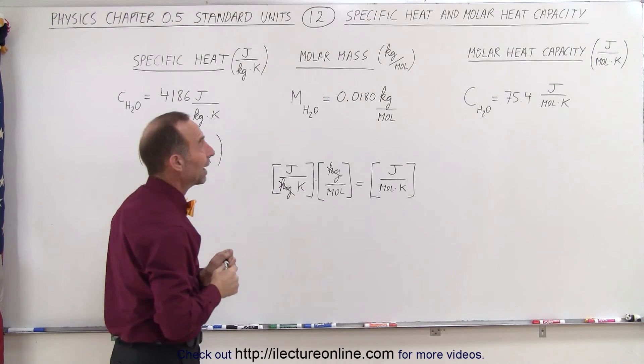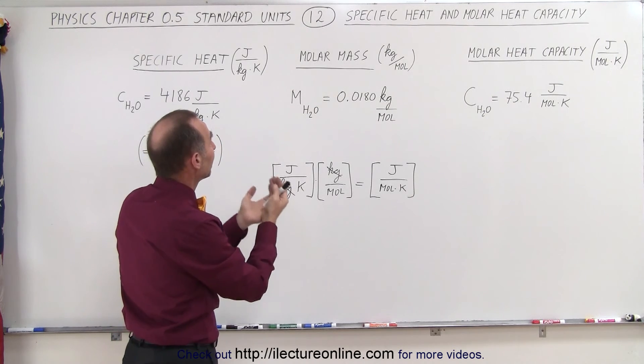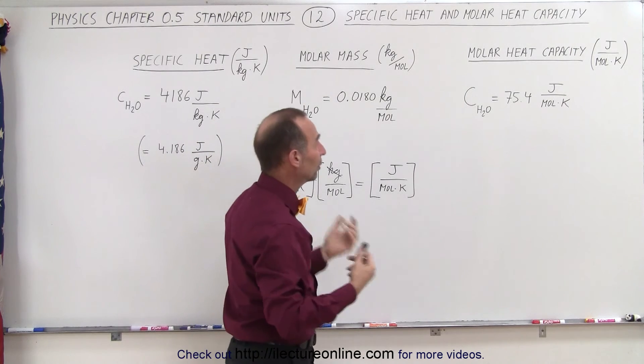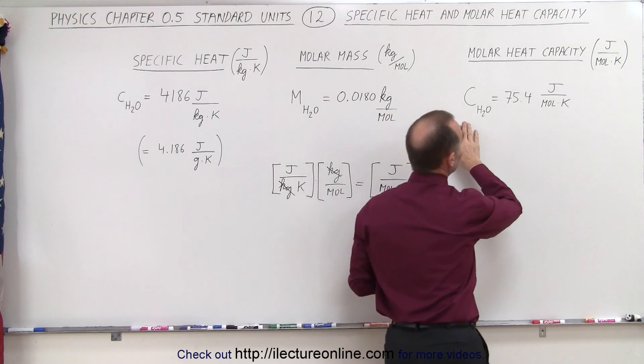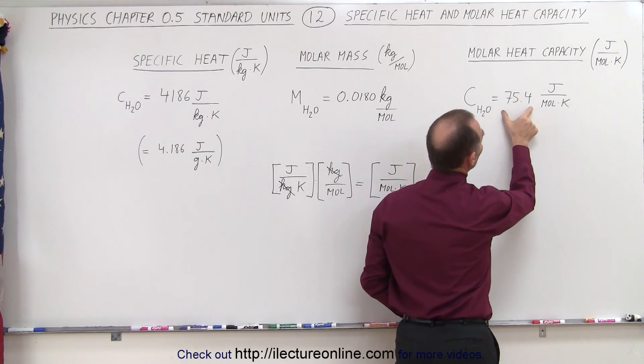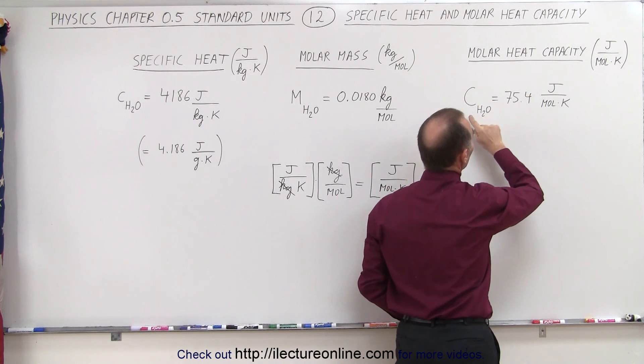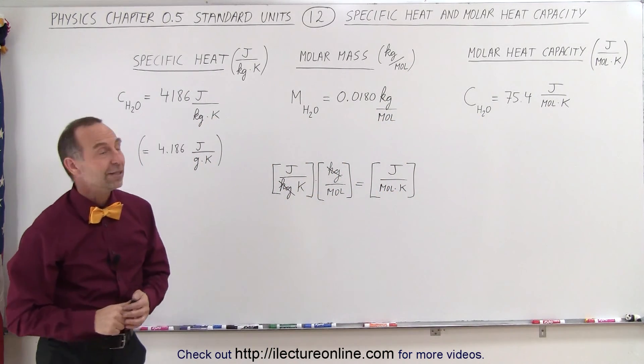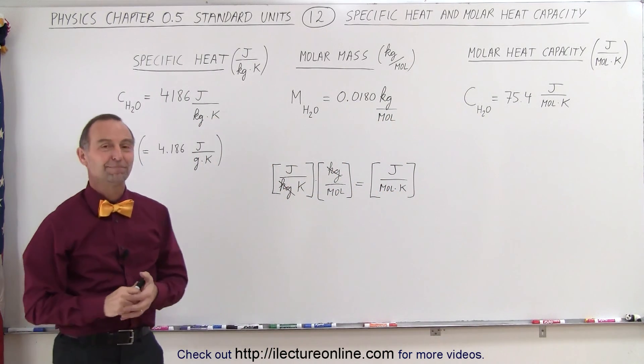So you can see that molar mass, or molar heat capacity, simply means that we multiply specific heat times the molar mass. In other words, molar heat capacity simply means that it's that many joules that you need, 75.4 joules, to raise the temperature of one mole of water by one degree kelvin. And that's how we define these units. Thank you.